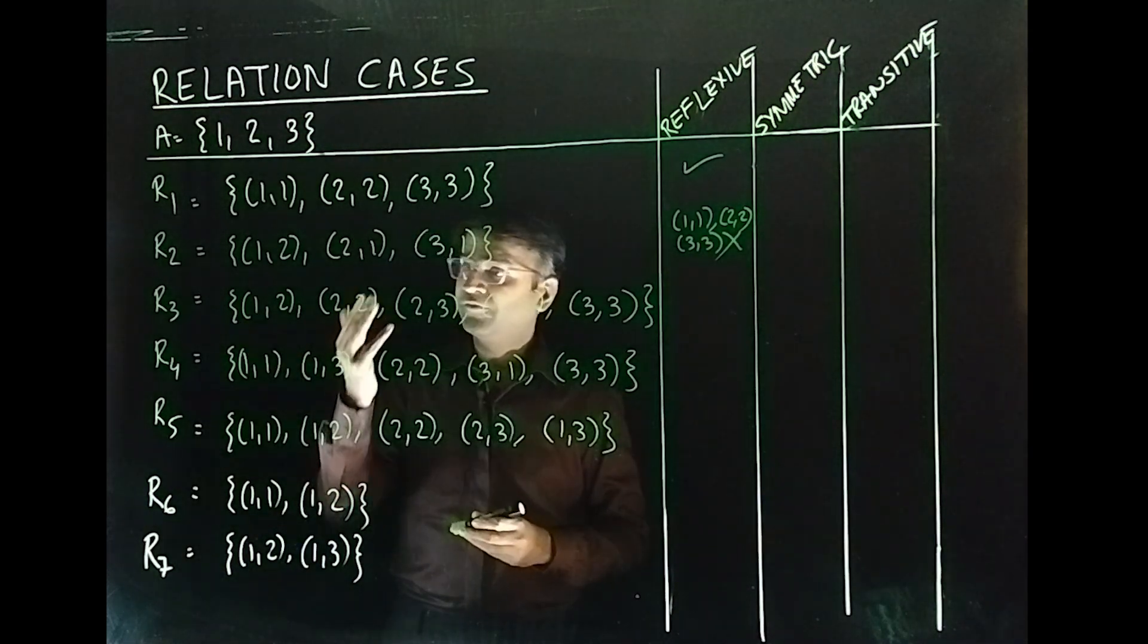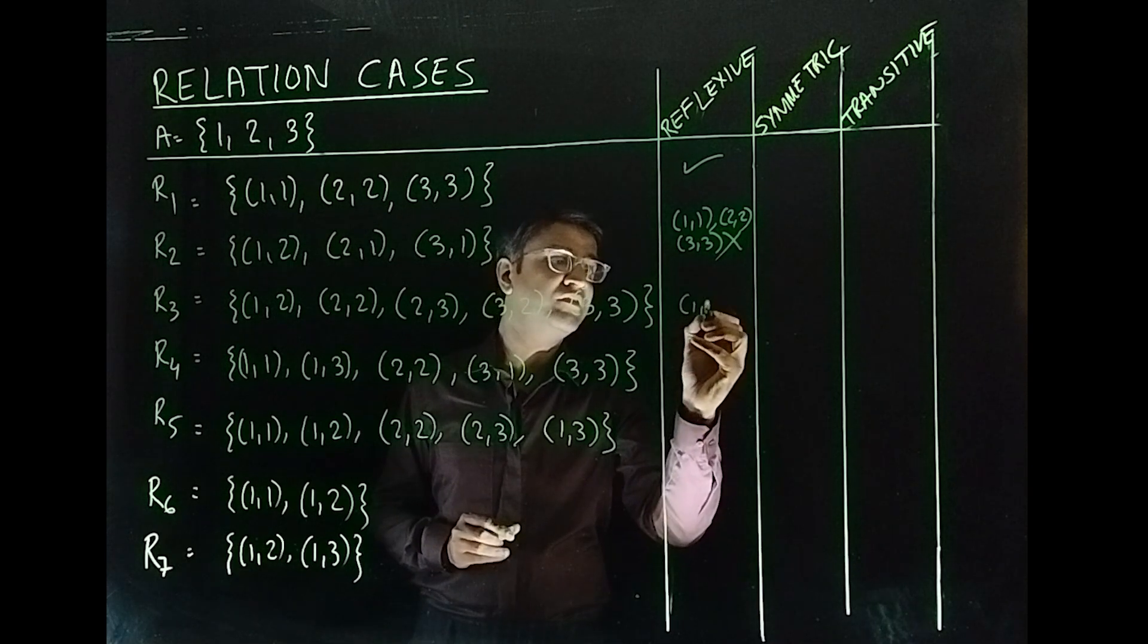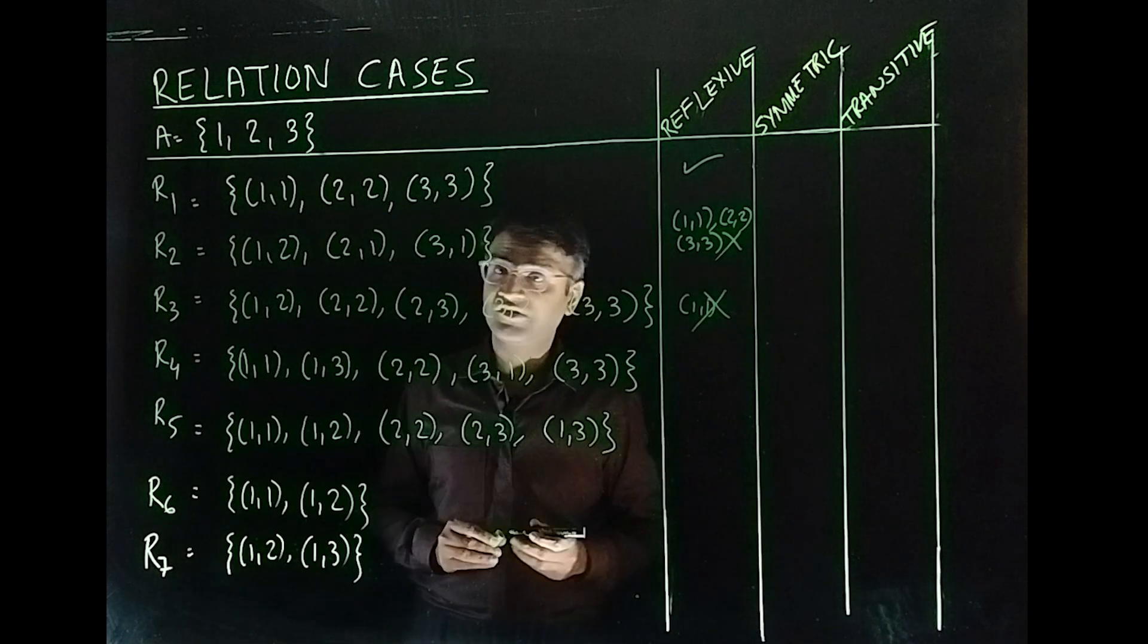What about R₃? You have (2,2), (3,3). What about (1,1)? So (1,1) is missing, so no, it is not.